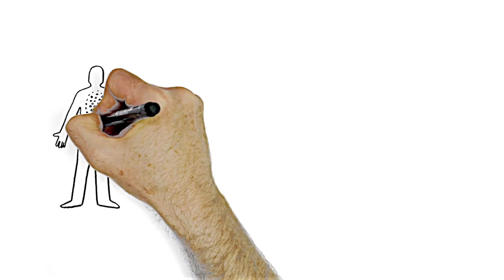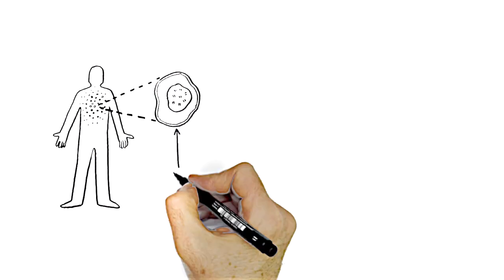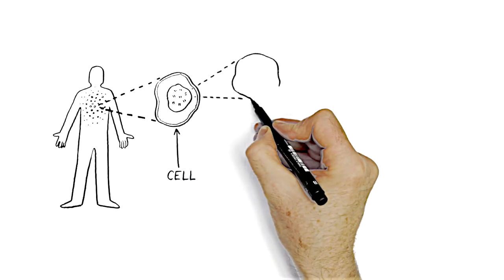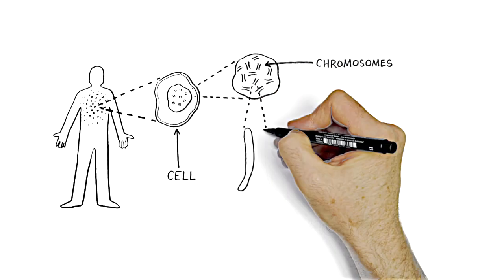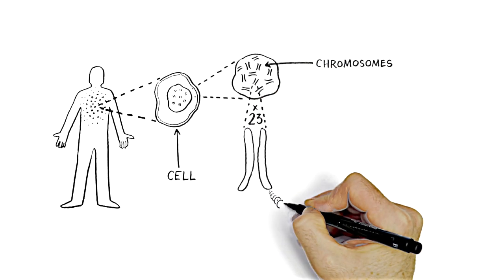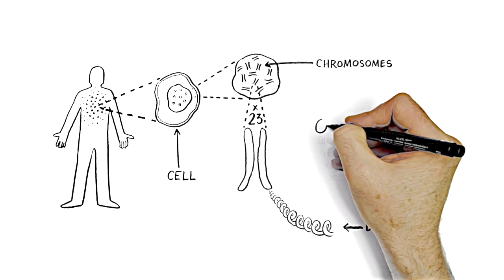Each human body is made of millions of cells. Each cell contains 23 pairs of chromosomes. Half we inherit from our mum and half we inherit from our dad. Chromosomes are stick-like structures with genes scattered along their length. This whole structure is made of DNA.